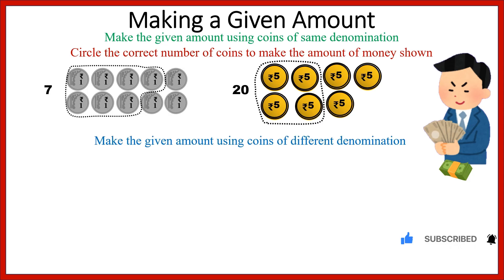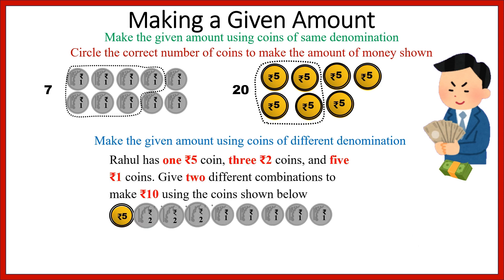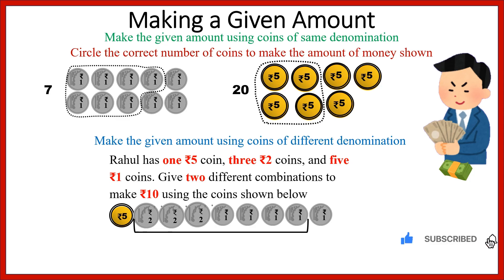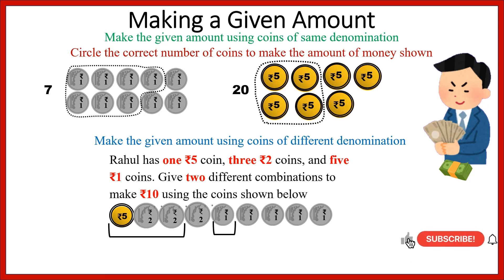Next is making the given amount using coins of different denominations. Rahul has 1 five-rupee coin, 3 two-rupee coins, and 5 one-rupee coins. Give 2 different combinations to make rupees 10 using the coins shown. The first combination: 2 plus 2 plus 2 plus 2 plus 1 plus 1 equals 10. Second combination: 5 plus 2 plus 2 plus 1 equals 10.